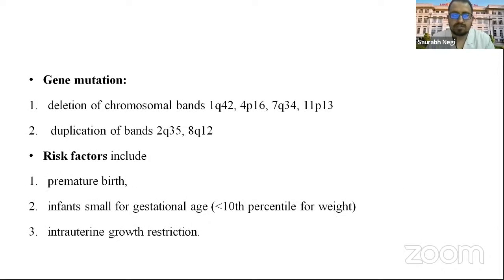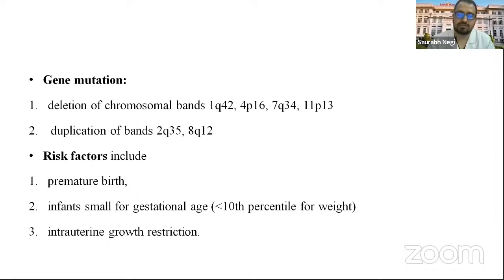Related to gene mutations, commonly associated with deletion of chromosomal bands 1q42, 4q16, 7q34, and 11q13; and related to duplication of chromosomal bands 2q35 and 8q12. Other risk factors include premature birth, infants small for gestational age — which includes less than the 10th percentile of weight and intrauterine growth restriction.